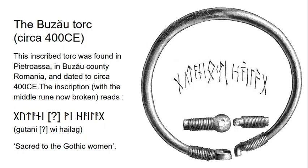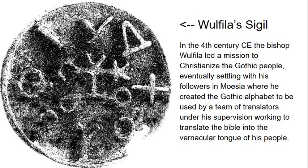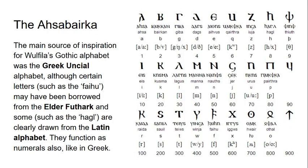Bishop Wulfila led a mission to Christianize the Gothic people, who had hitherto been pagans before the fourth century CE. After facing persecutions from the Gothic king Athanaric, Wulfila eventually led his followers to settle in Moesia — incorporating modern-day Romania and several Balkan countries. In Moesia, he created the Gothic alphabet, to be used by a team of translators under his supervision who worked to translate the Bible into the Gothic language, the vernacular tongue of his people.